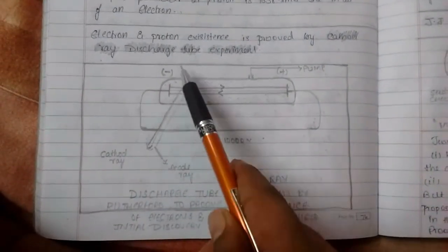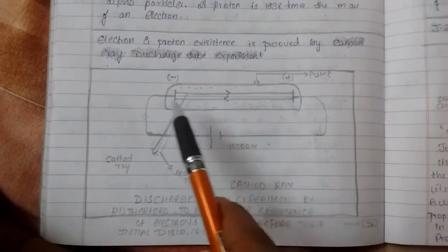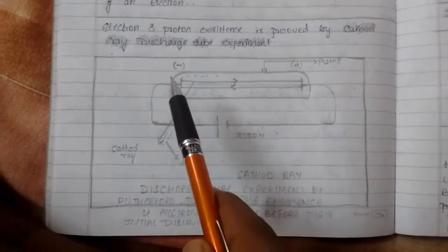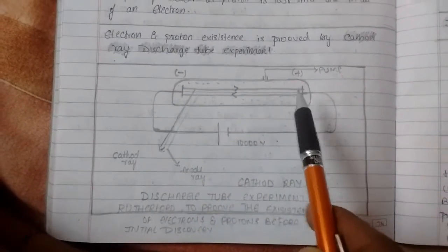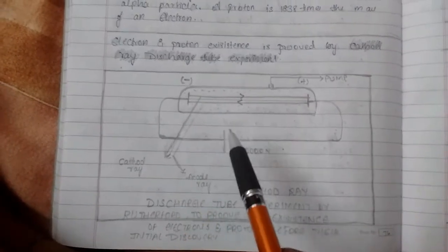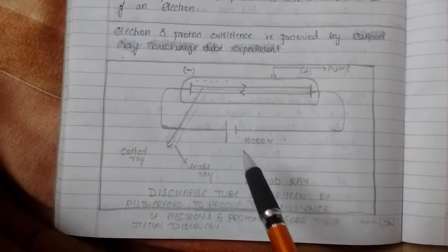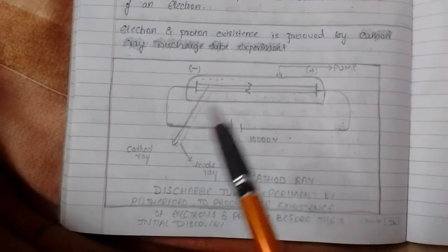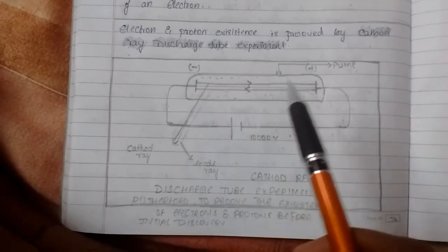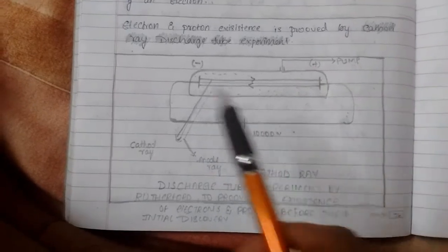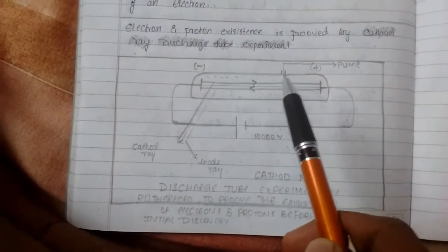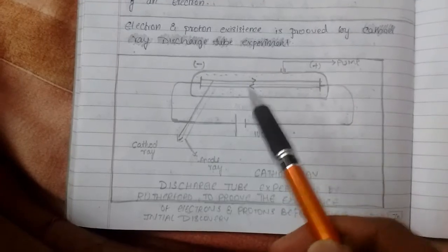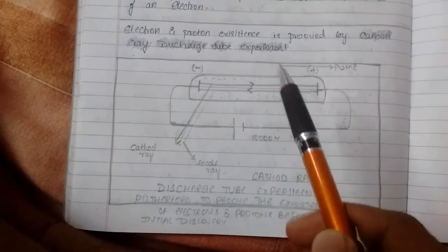And these two are two electrodes. And these are connected with the electric circuit with a voltage of 10,000 volts with a high pressure over here, and it is 0.01 mm of mercuric pressure. This is the negative electrode, this is the positive electrode. This is the pump where pressure in the cylinder is regulated.